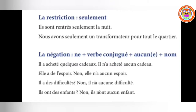For example: Il a acheté quelques cadeaux — he has bought some gifts. The negative is: Il n'a acheté aucun cadeau — he has not bought any gift. Here cadeau is masculine so we use aucun. Then: Elle a de l'espoir — she has some hope. Negative: Il n'a aucun espoir — he has no hope. Then: Il a de la difficulté — difficulty is feminine, so we use aucune — Il n'a aucune difficulté — he has no difficulties.